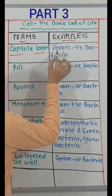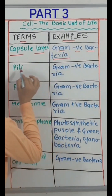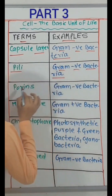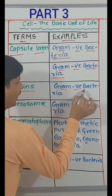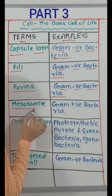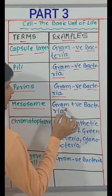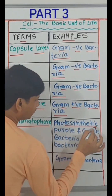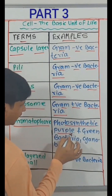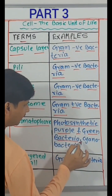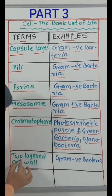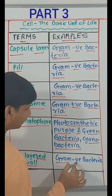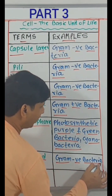Capsule layer — gram-negative bacteria. Pili — gram-negative bacteria. Porins — gram-negative bacteria. Mesosome — gram-positive bacteria. Chromatophore — photosynthetic purple and green bacteria, cyanobacteria. Two-layered cell wall — gram-negative bacteria.